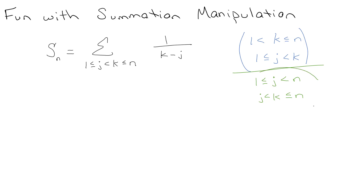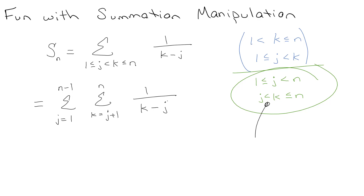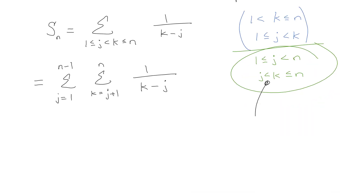It doesn't really matter which way you go — I'll go with the second interpretation because I like to put j's first, alphabetically. So j starts at 1 and goes to n−1 (since it's a strict less-than with integers), and k starts at j+1 and goes all the way to n, giving the sum of 1/(k−j).